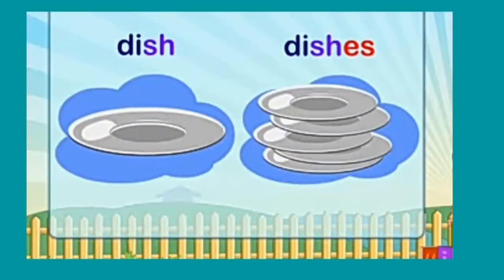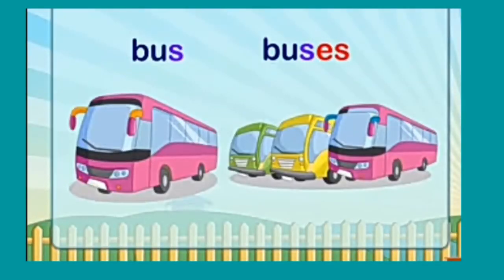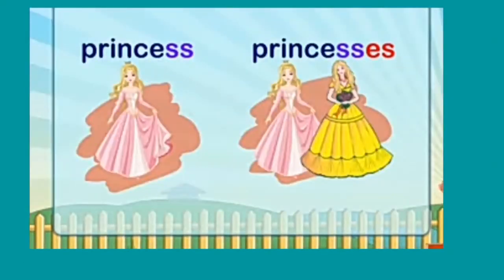Dish → dishes: SH aaya, isliye hum ES lagayenge. Mango → mangoes: kyunki last mein O hai, isliye ES lagayega. Bus → buses. Princess → princesses.